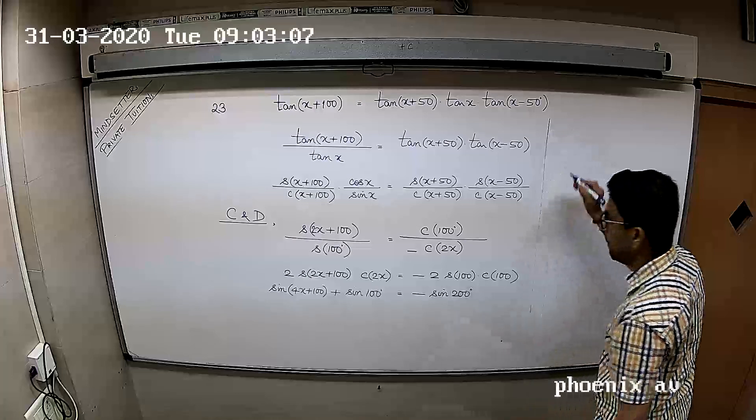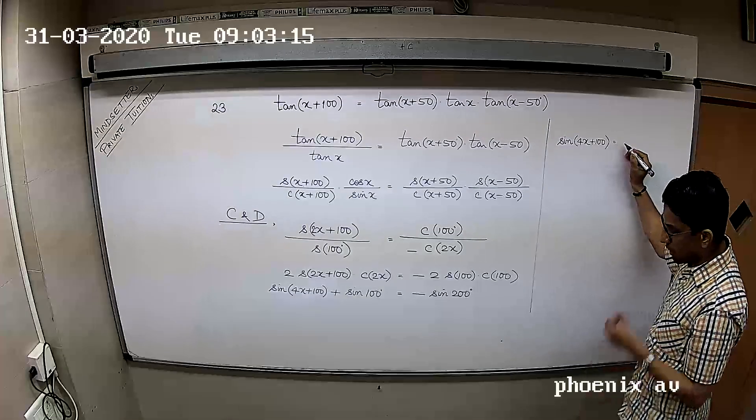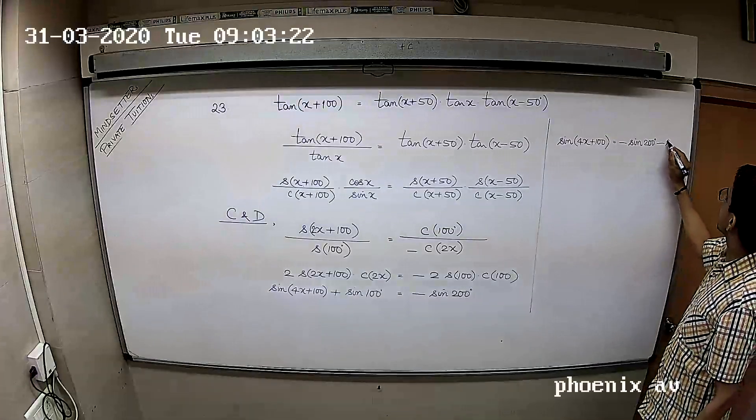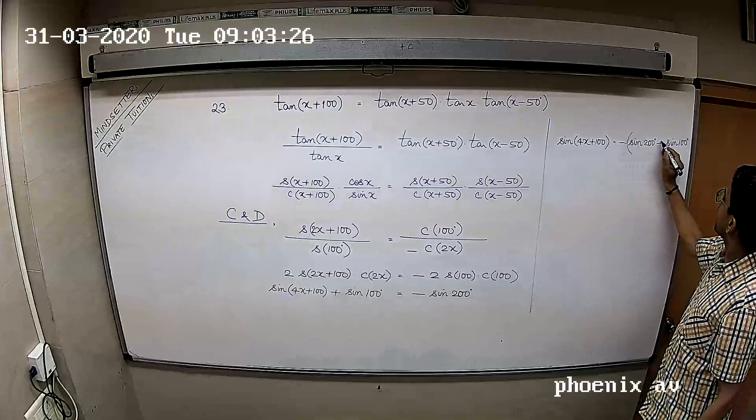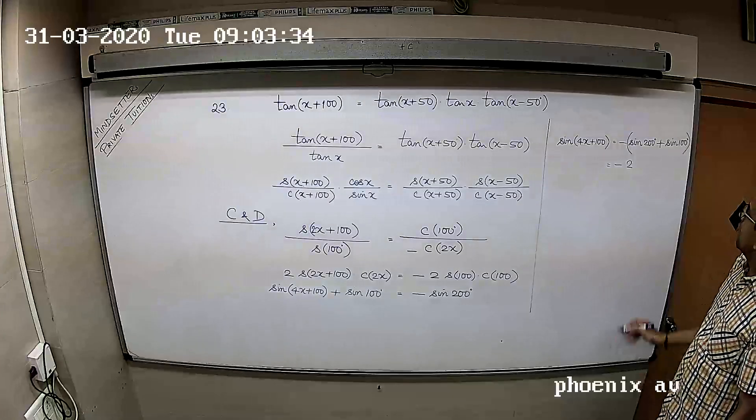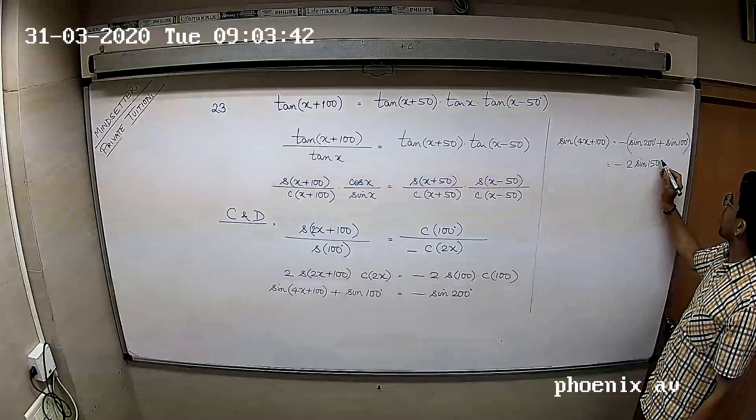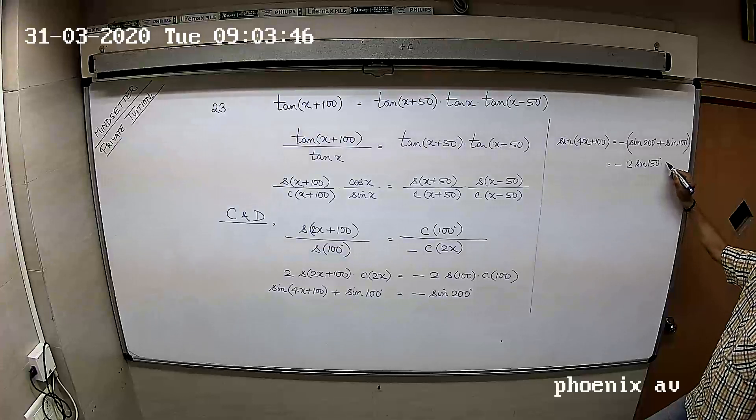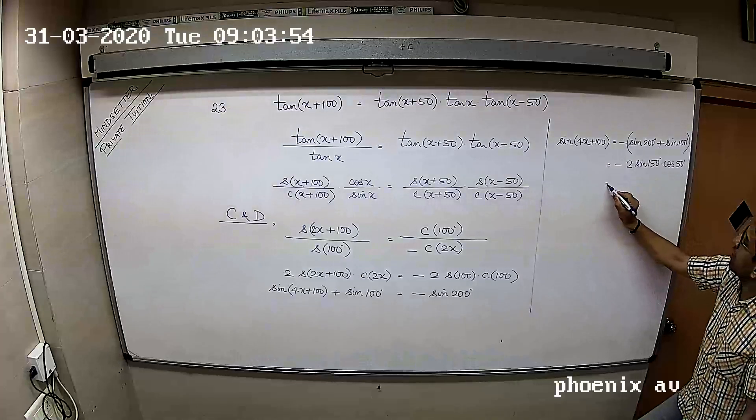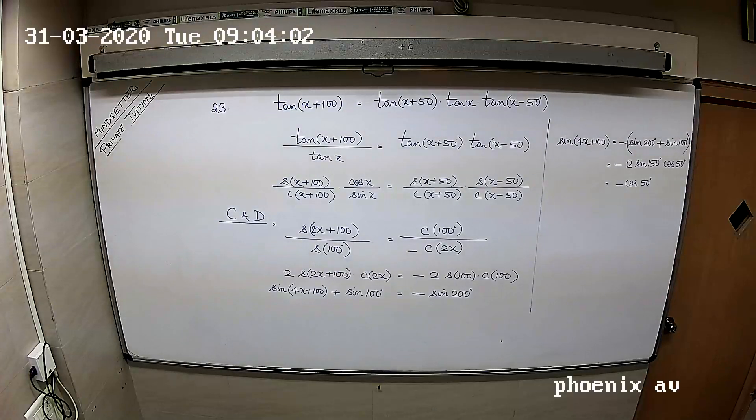Let's isolate the X on one side and take the sine 100 that side. Sine of 4X plus 100 is minus sine 200 minus sine 100. Shall I make this minus 2 sine, C plus sin D is 2 sine C plus D by 2 cos C minus D by 2, cos 50. Sine 150, and 2 go away, minus cos 50.